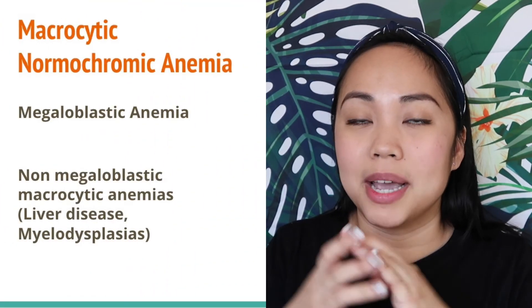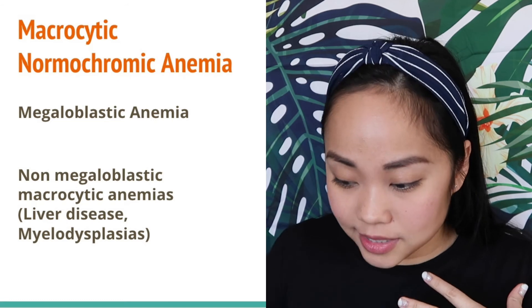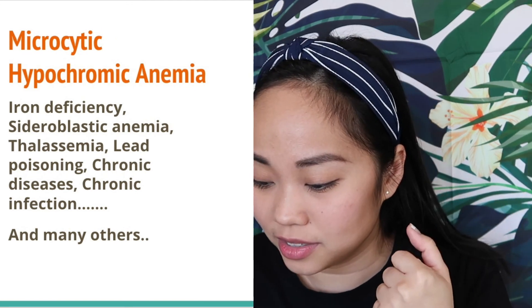If MCV is greater than 100, the cells are macrocytic with normal MCHC — macrocytic normochromic anemia — this includes megaloblastic anemia, or non-megaloblastic causes such as liver disease and myelodysplasia. If MCV is less than 80 and MCHC is less than 32% — microcytic hypochromic anemia — possible causes include iron deficiency anemia, thalassemia, sideroblastic anemia, and lead poisoning. Further diagnosis is needed to narrow down the cause.